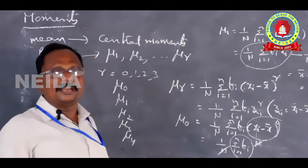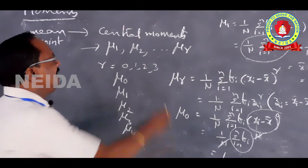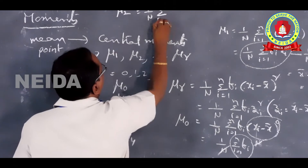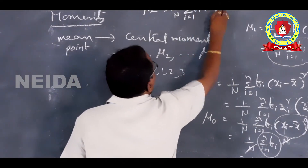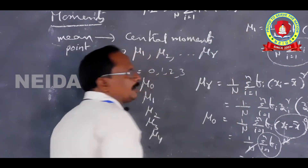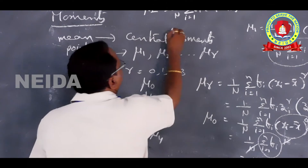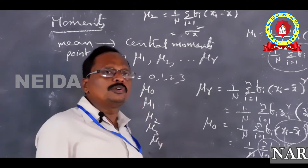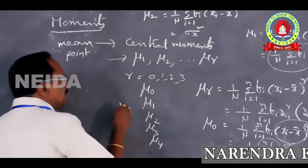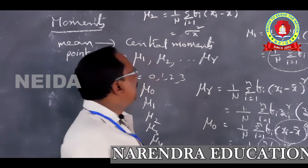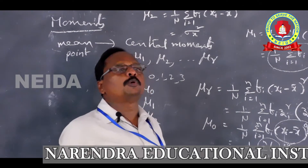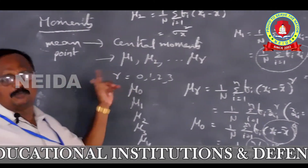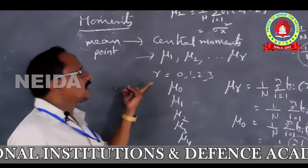So μ₀ = 1 and μ₁ = 0 are the fundamental central moments. For r = 2, μ₂ = (1/n) Σ fᵢ(xᵢ − x̄)², which is the formula for variance, denoted σ². We always take μ₂ as the variance. Similarly, μ₃ = (1/n) Σ fᵢ(xᵢ − x̄)³, and we can write all such formulas. This completes the central moments.